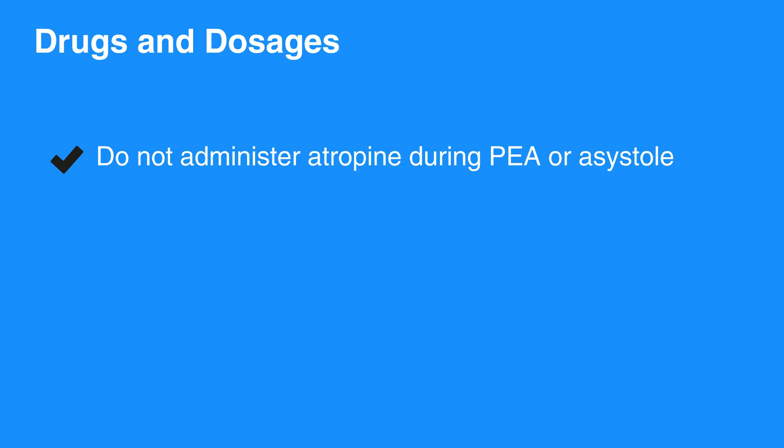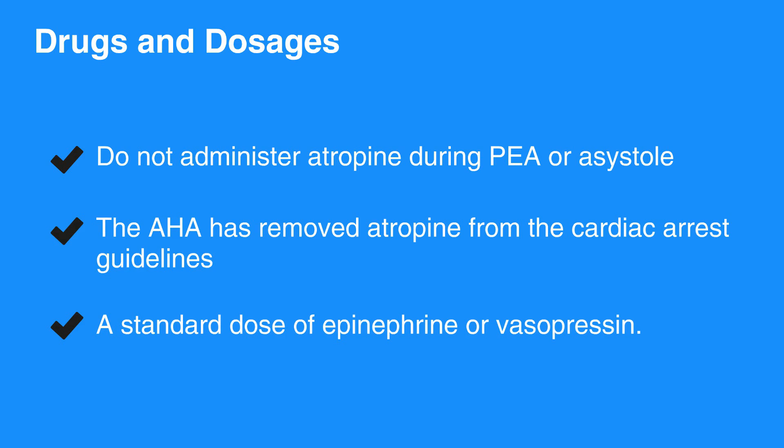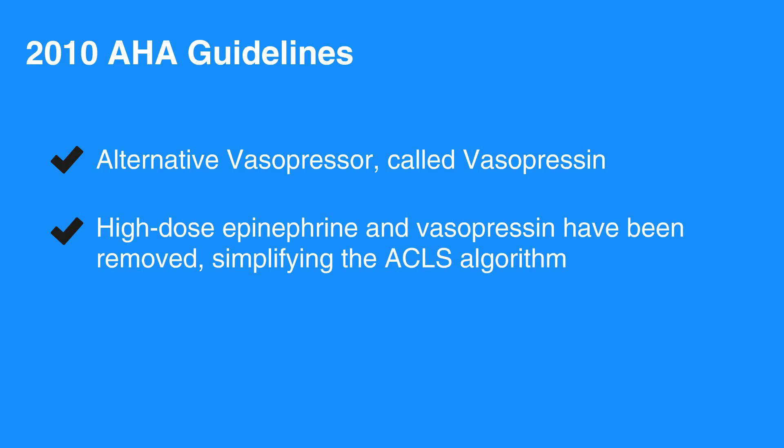Therefore, the AHA has removed atropine from the cardiac arrest guidelines. You may only administer a standard dose of epinephrine or vasopressin. Preliminary research suggested that epinephrine in higher doses may produce improved results in resuscitation. However, research conducted after the 2010 guidelines publication failed to show any benefit over a standard dose of 1 mg epinephrine. Likewise, the 2010 AHA guidelines offered an alternative vasopressor called vasopressin, which could be used instead of or after the first dose of epinephrine. Subsequent research showed that vasopressin offered no benefit over standard dose of epinephrine. Without a demonstration of superiority, both high-dose epinephrine and vasopressin have been removed, simplifying the ACLS algorithm.